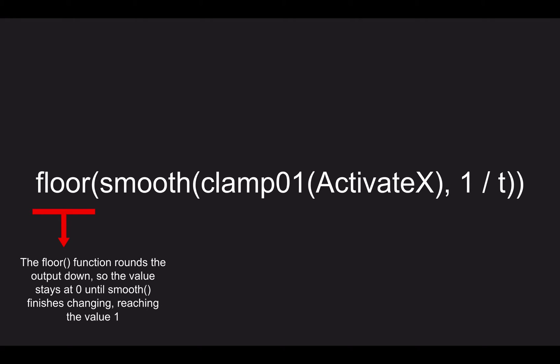Now all this is happening within that floor function. The floor function looks at all this stuff happening but it doesn't care until an integer value has been achieved. Since we started at zero, no matter what value it is between zero and one, if it's a decimal it's just going to round straight down to zero. So it stays at zero until the smooth function finally stops changing and has finished changing to one, and since it's achieved the integer value one, that's when the floor function will finally output the value.